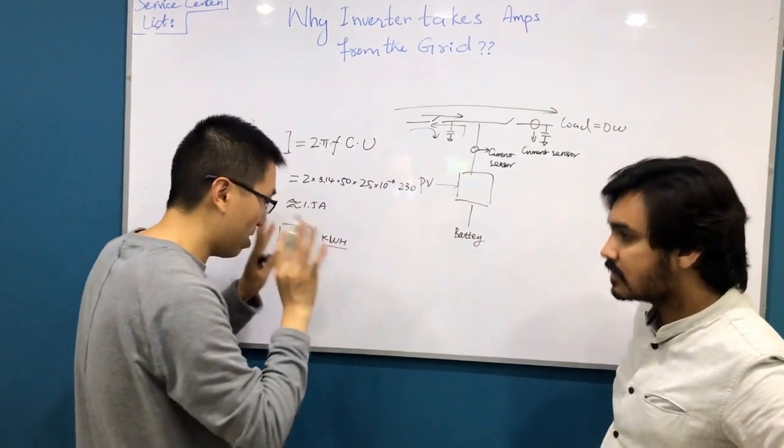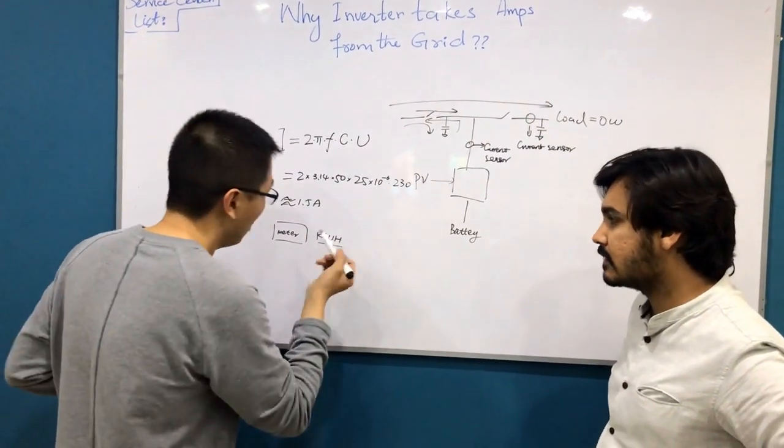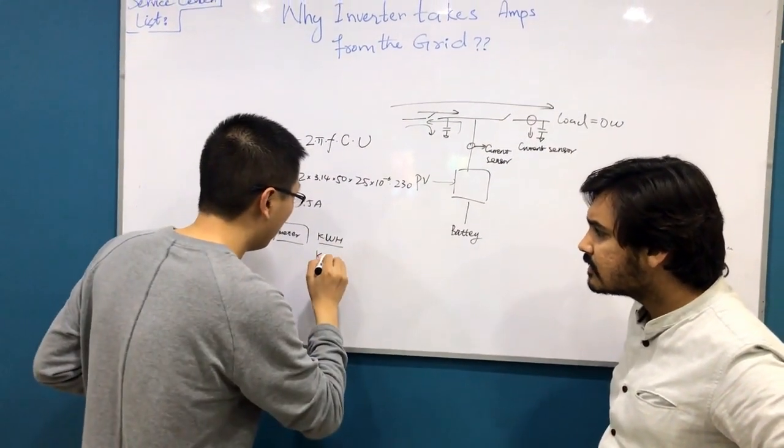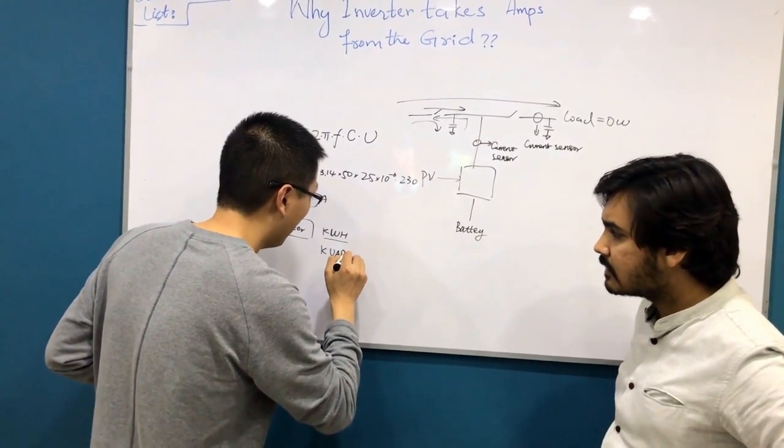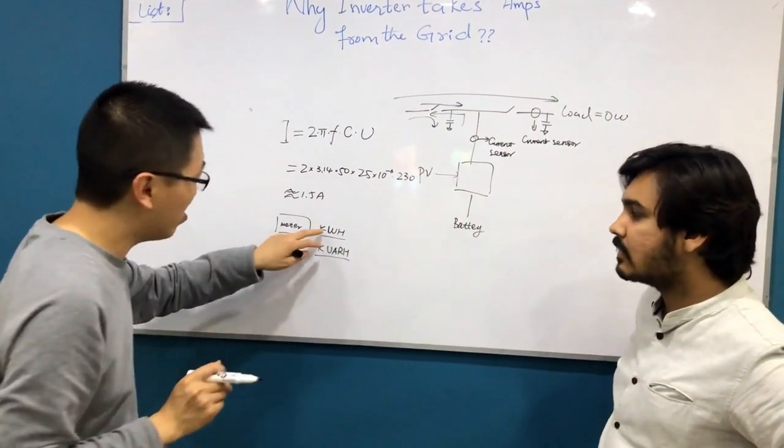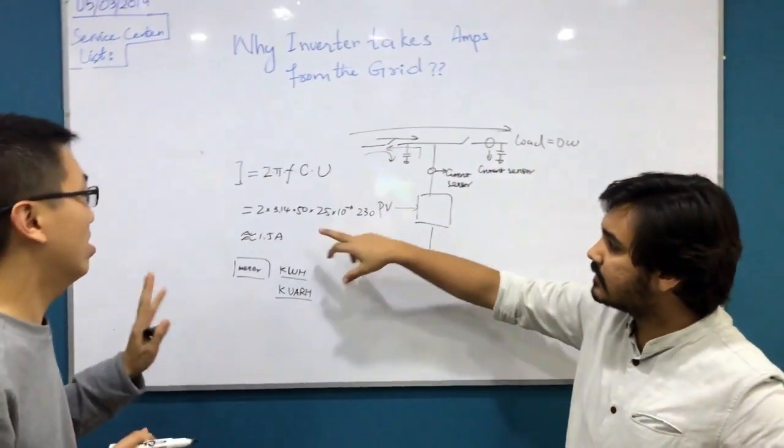It is just the reactive power of the capacitor. So if your meter is KWH, actually there is no KWH generation. Only if you have this kind of meter, maybe it can calculate, but for this one, no. It cannot calculate this.